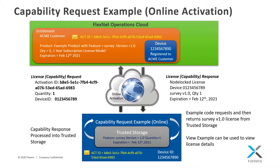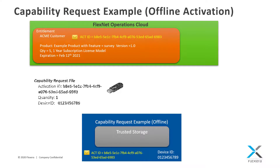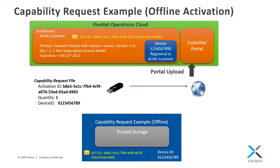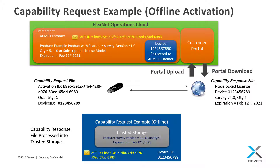Now let's take a look at how a license can be activated on a device that does not have an internet connection. In this scenario, the capability request generated by the example will be saved to a file. This file will then be transported to an internet-connected system where the capability request file can be manually uploaded into the FlexNet Operations customer portal. As with online activation, FlexNet Operations will verify the activation ID and requested quantity are valid, register the device to the Acme customer account, and generate a capability response file. This file can then be downloaded and transported back to the disconnected device. The response file is then processed into trusted storage. From this point on, there is no difference between online and offline activation.